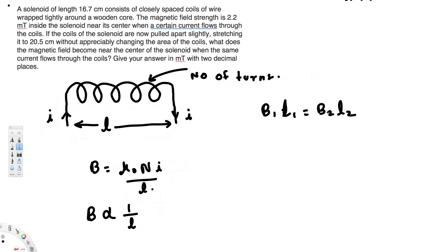So in order to find that, we have to rearrange this equation. So B₂ is going to be equivalent to B₁L₁ divided by L₂. Okay, the initial magnetic field we had, that is 2.2 millitesla, so we put that one right here.